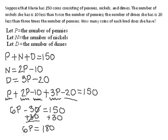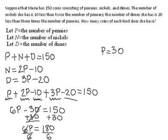The last step is isolating P by dividing by 6. So P equals 180 divided by 6, which is 30. So P equals 30 — we've found the number of pennies.